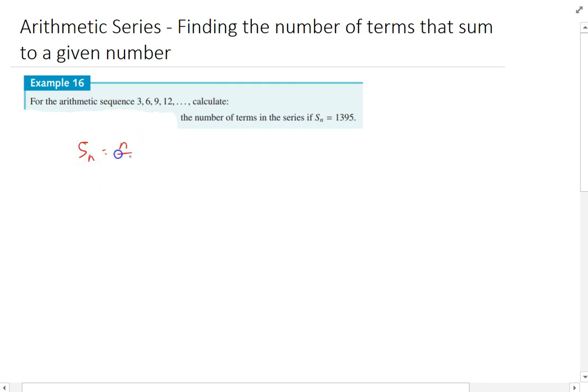So the sum of an arithmetic series is equal to n over 2 times 2a plus n minus 1 times d, and I'm trying to find out what n is. So 1395 equals n over 2 times 2 times the first term which is 3, plus n minus 1 times d which is the common difference, which in this case is also 3.